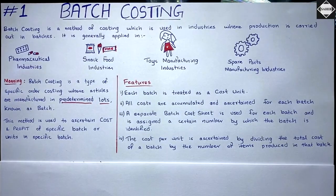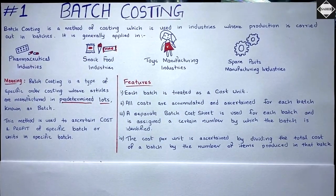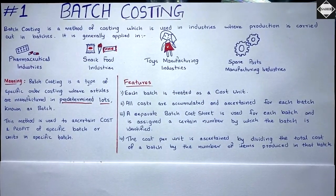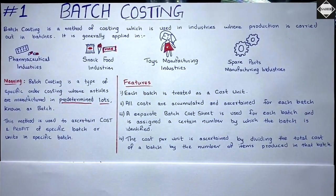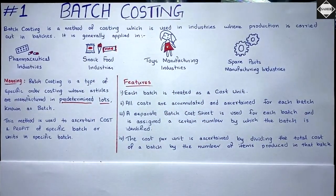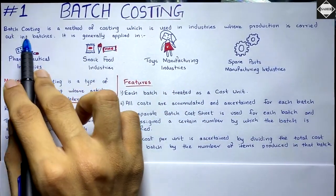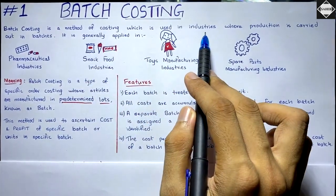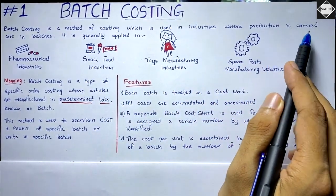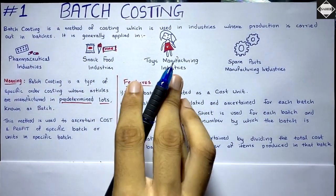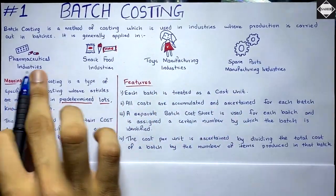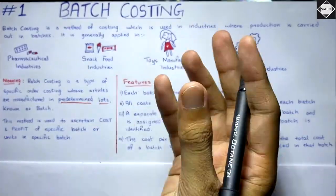Welcome back to Sahab Academy. In today's video we're going to start this new chapter of cost accounting: batch costing. This is a very simple chapter, not much to learn — it's kind of similar to job costing which we've seen in previous videos. Batch costing is a method of costing used in industries where production is carried out in batches or groups.